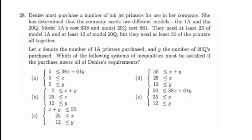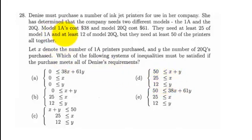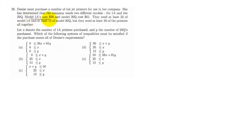Let's get started with number 28 of this practice final exam. Denise must purchase a number of inkjet printers for use in her company. She has determined that the company needs two different models, the 1A and the 20Q. The 1A costs $38 and the 20Q costs $61. This seems important, so I'm going to underline that.